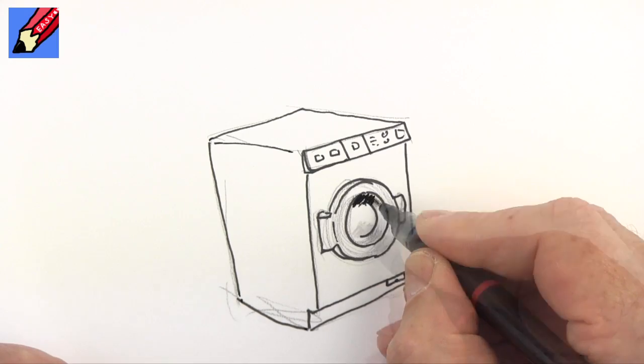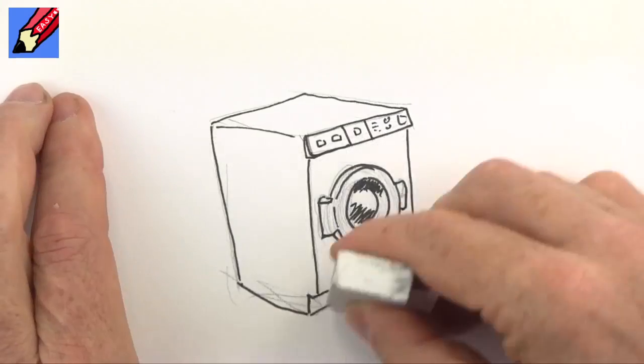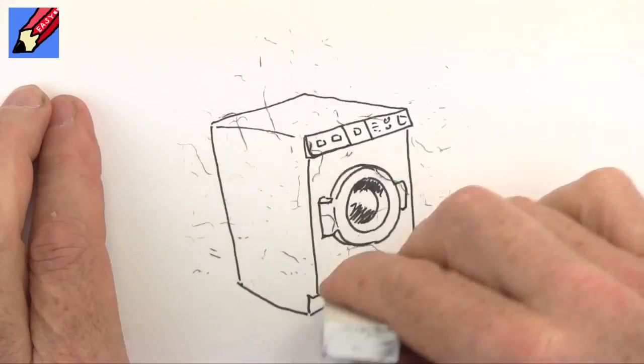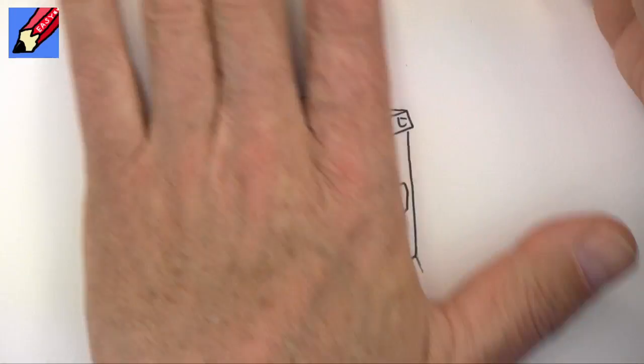Now you're going to put some shading in there like that. When you're sure that the ink is dry then erase the pencil lines.